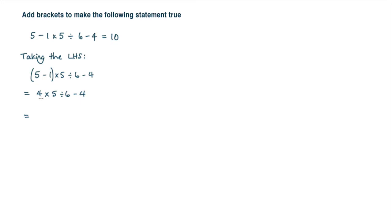The next calculation I would do would be this multiplication. So 4 multiplied by 5 would be 20. We're dividing by 6 and subtracting 4. Now I know straight away this is going to be wrong because 20 divided by 6 I'm not going to get a whole number. Then I'm subtracting 4. Well that does not equal 10. So that is clearly incorrect.